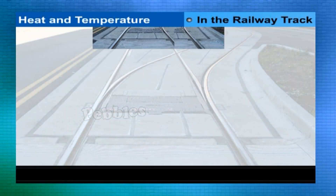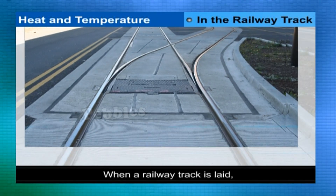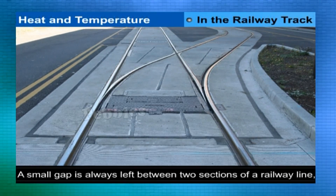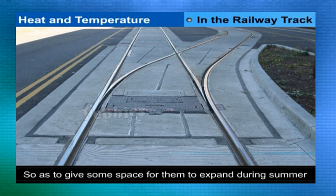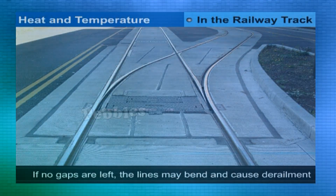In the railway track: when a railway track is laid, a small gap is always left between two sections of the railway line, so as to give some space for them to expand during summer. If no gaps are left, the lines may bend and cause derailment of trains.